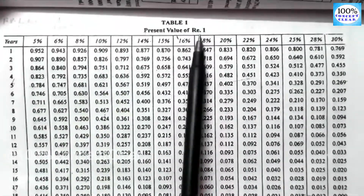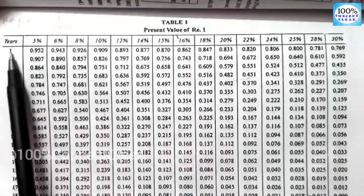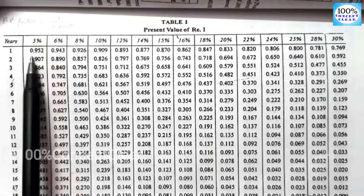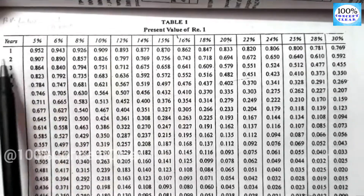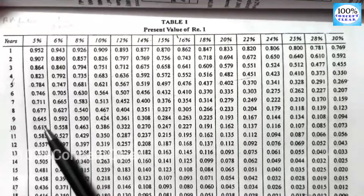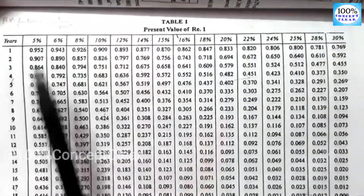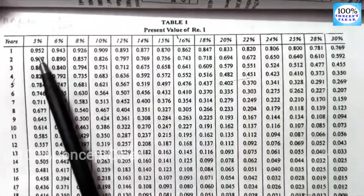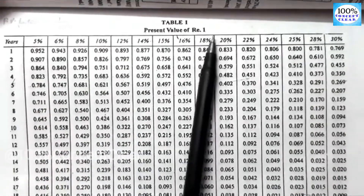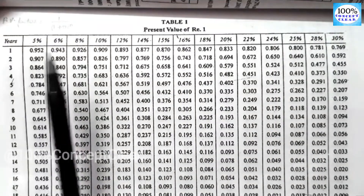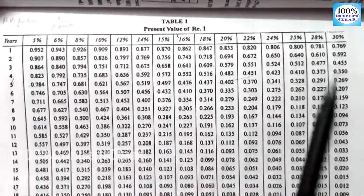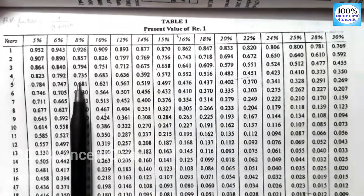Table 1 is the present value of Rupee 1. We are considering the value of Rupee 1 over years. In the first year, the value of Rupee 1 is 0.952 at 5% — it decreases. In the second year at 5%, the value is 0.907 — it decreases further. This demonstrates the concept of time value of money. This is Table 1.